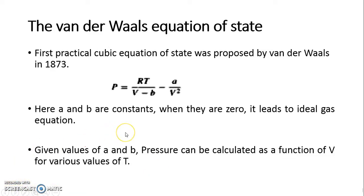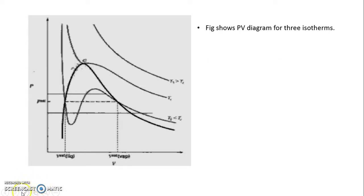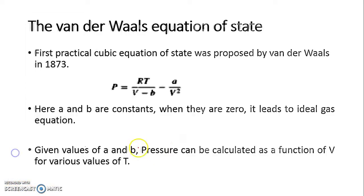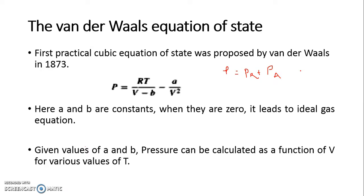In the previous video we talked about cubic equation of state. We said that the cubic equation of state was basically proposed by Van der Waals in the 1870s, with the basic equation being P equal to Pr plus Pa, where Pr refers to the repulsive term which increases the pressure on the walls of the container, and Pa is an attractive term which decreases the pressure on the walls of the container, hence the second term is negative.